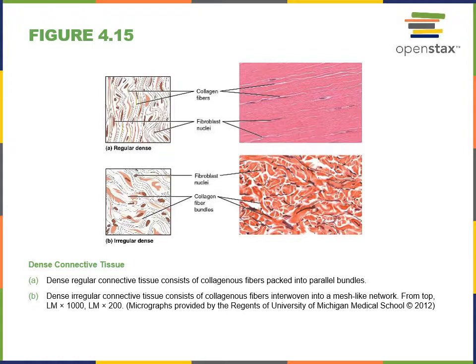Dense connective tissue proper forms tendons and ligaments as well as capsules that surround organs. Dense regular connective tissue has collagen fibers closely packed together and running parallel. These parallel bundles of collagen fibers provide strength to resist a force and are found in tendons and ligaments. The predominant cells are fibroblasts and fibrocytes.